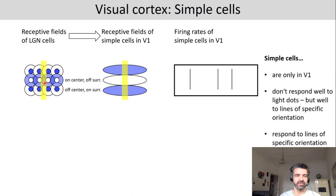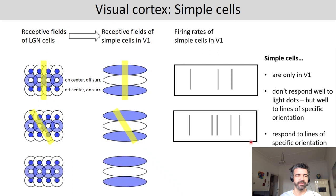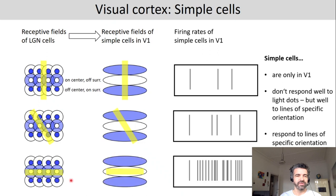For example, if you have an input that doesn't fit the orientation, you would see no effect — only sporadic action potentials, nothing going on. If it's a little bit closer to the preferred orientation but still not fitting, there might be some more sporadic activation. But then if you're presented at just the right orientation, you will get a very strong response.